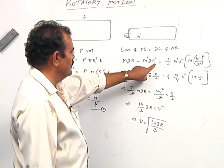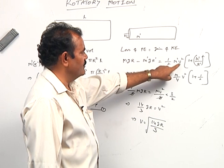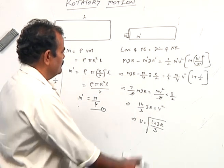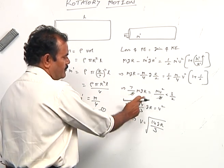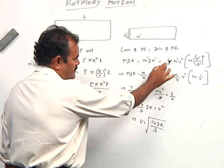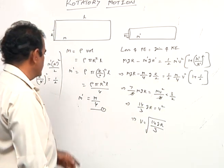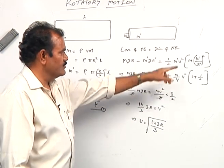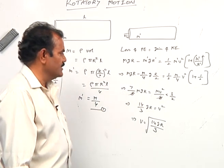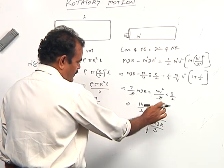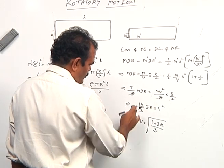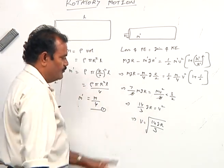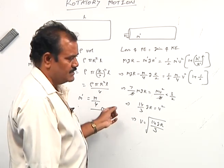Gain of KE is (1/2) m' v² (1 + k'²/r'²). So mgr minus mgr/8 = (7/8)mgr. With m' = m/4 and k'²/r'² = 1/2 (solid cylinder), the right side becomes (m/4) v² × (3/2). Cancelling m and simplifying, v = √(14gr/3). This completes the first problem.